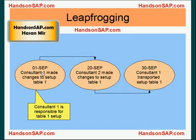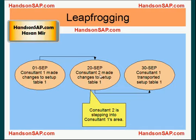On September 1st, consultant 1 made changes to the setup table — for example, table 1. Consultant 1 is responsible for table 1, so he made some changes to table 1. That's okay because that's his area. Now on 20th September, consultant 2 made some changes to table 1. Consultant 2 is not responsible for table 1 changes, but he is making changes to consultant 1's table. On 30th September, consultant 1 is supposed to transport all his settings of table 1 to some other client, and he is basically unaware that another consultant has made changes to his table. On 30th September, consultant 1 transported the setup of table 1.